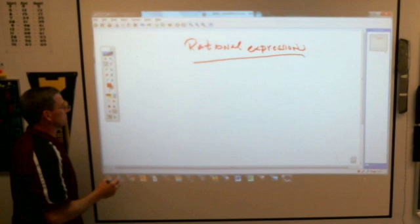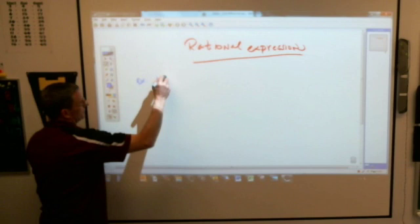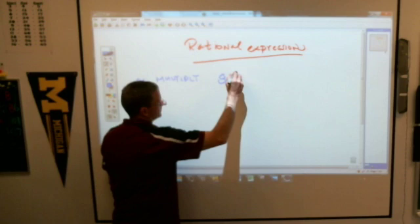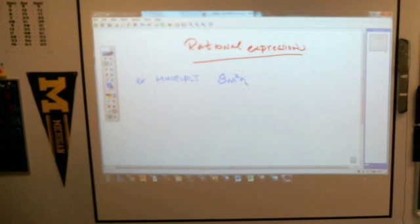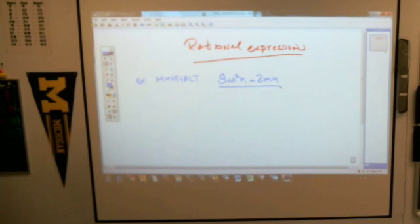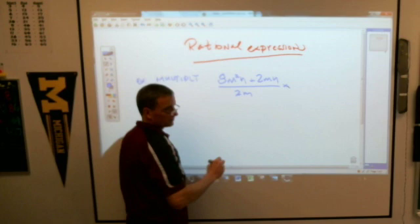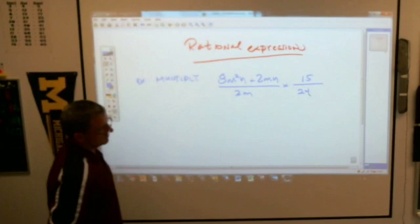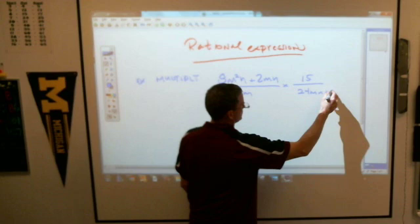I'm just going to do a couple examples because this is nothing difficult. One multiplication and one division. Multiply this. It looks much, much goofier than it really is. 8m²n plus 2mn all over 2m times... Are you looking at a book? Do you want to read it for me? 2m... Plus 6mn.